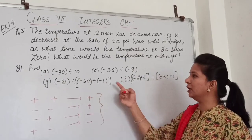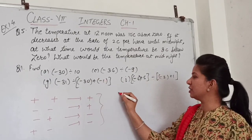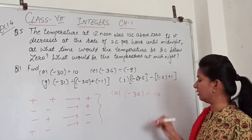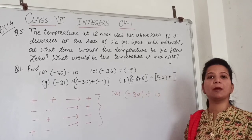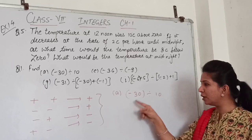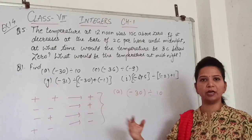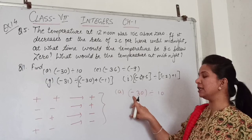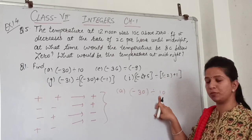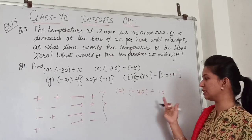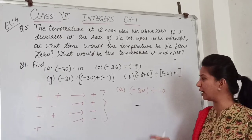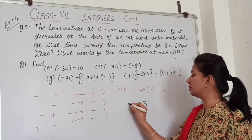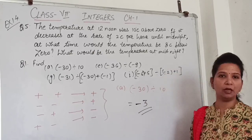The first question is minus 30 divided by 10. Simply, the symbols operate first. Here it is minus and plus. Minus plus is minus. 30 divided by 10 is 3. So the answer is minus 3.